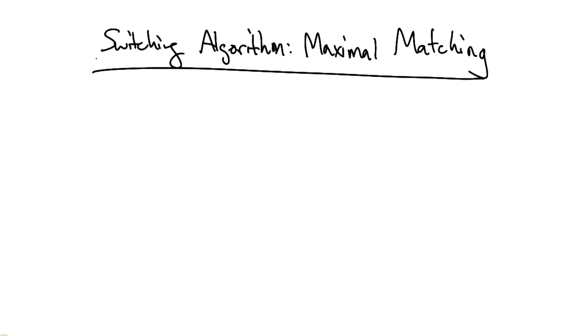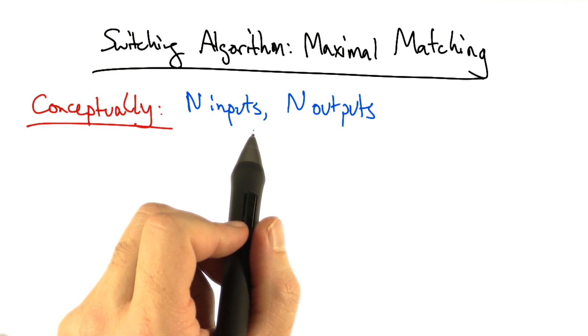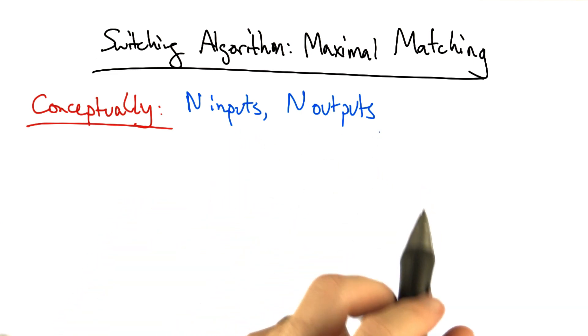We'd like the crossbar switching algorithm to achieve what's called a maximal matching. Conceptually, we have a router with N inputs and N outputs.